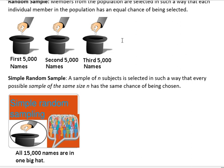So a random sample, everybody has an equal chance of being selected. But in a simple random sample, every possible combination of people has the same chance of being chosen.